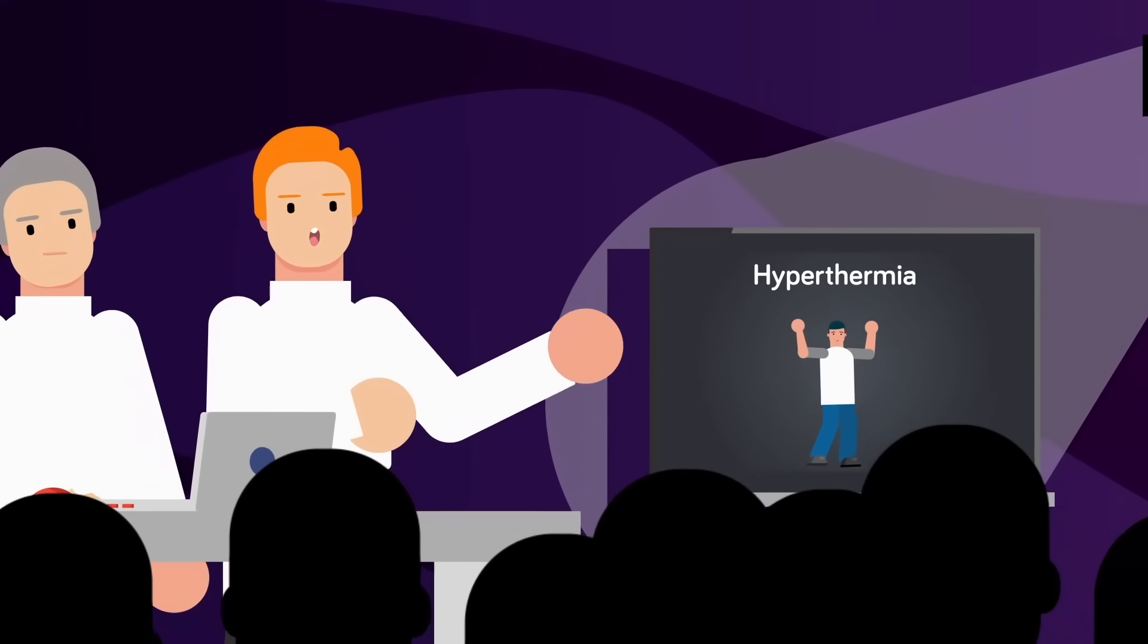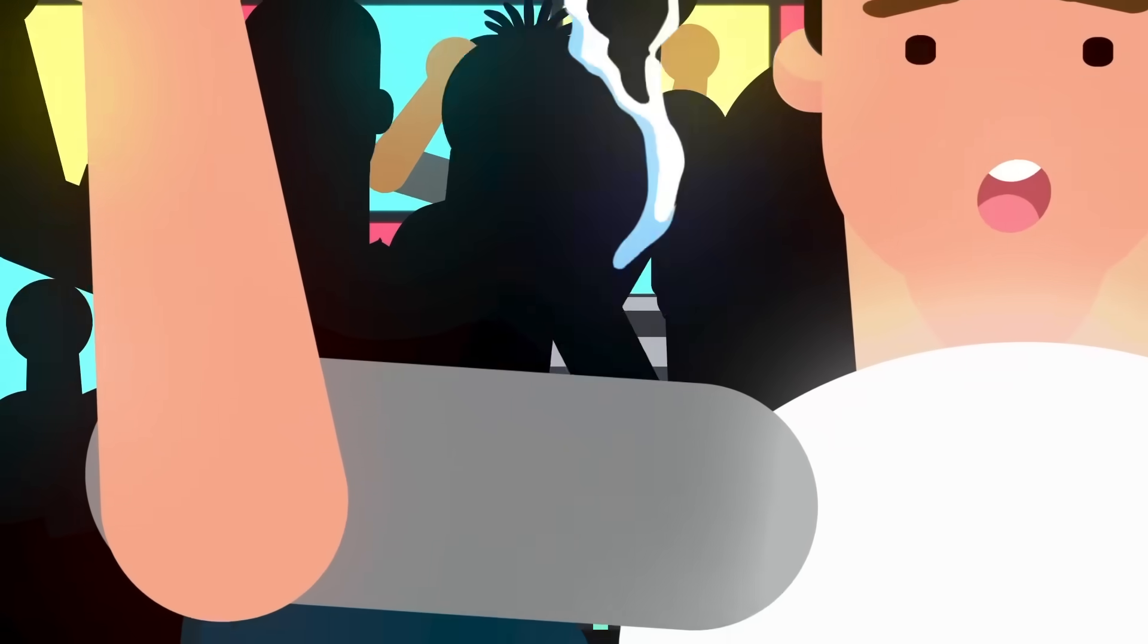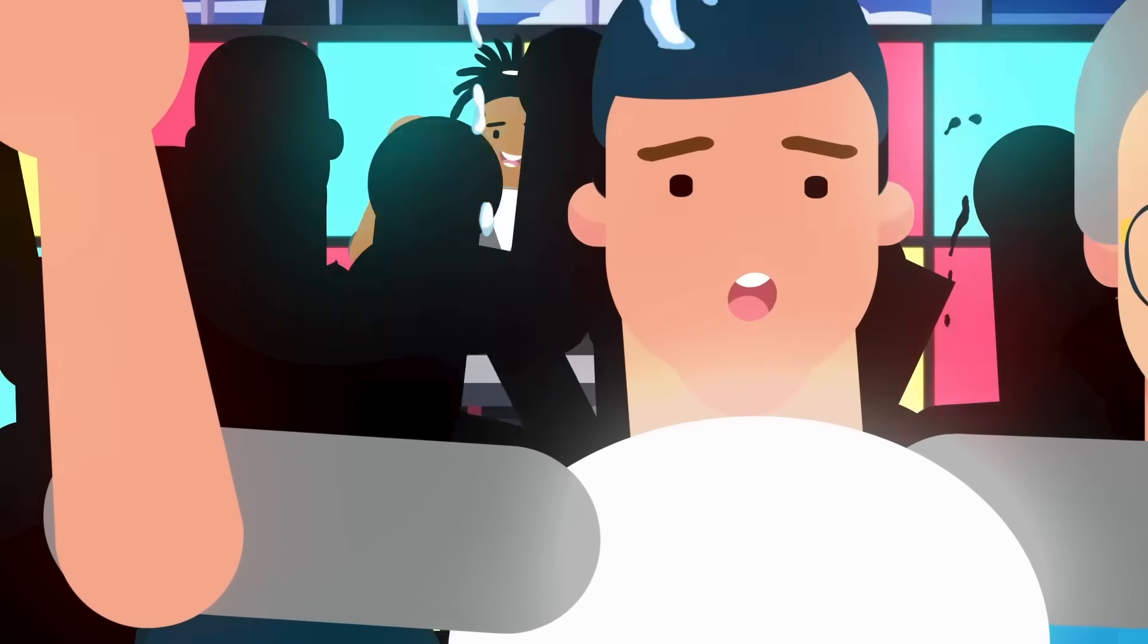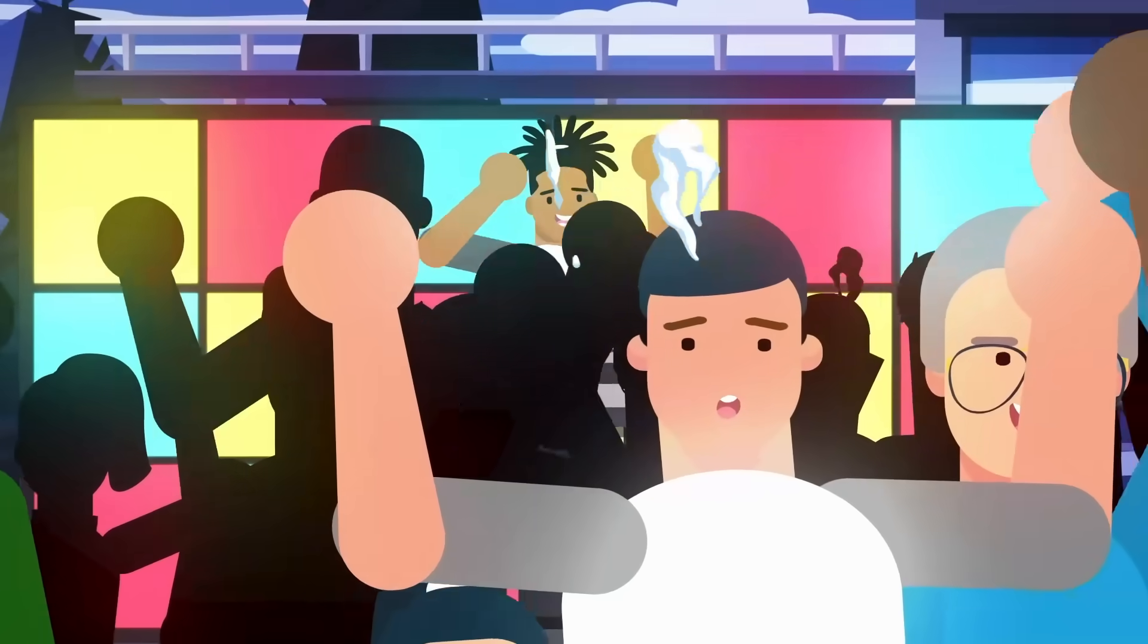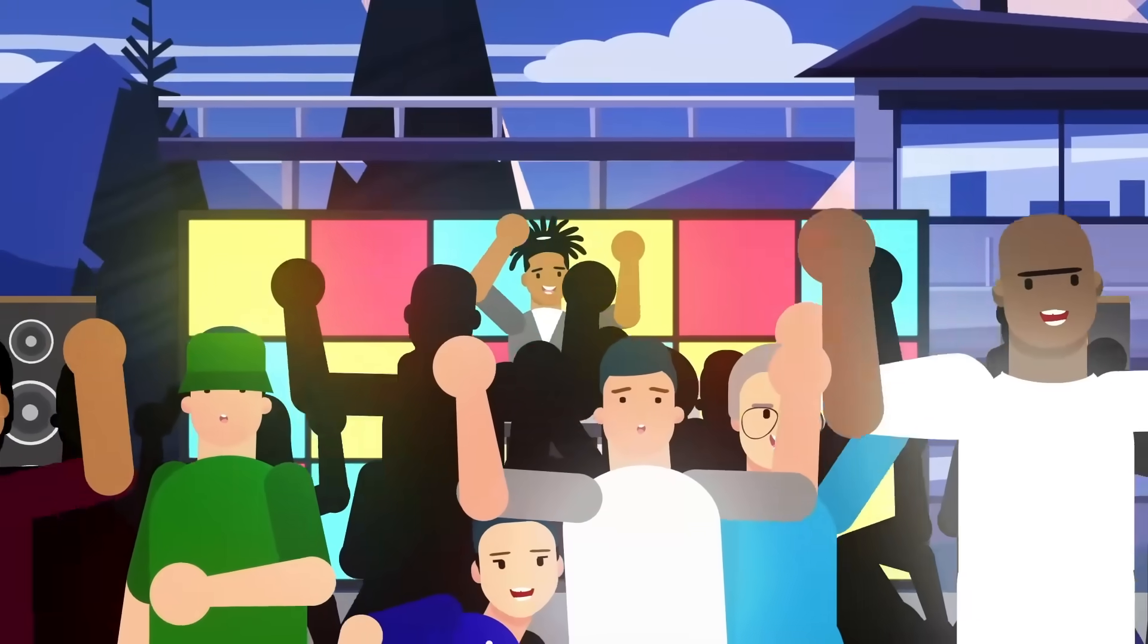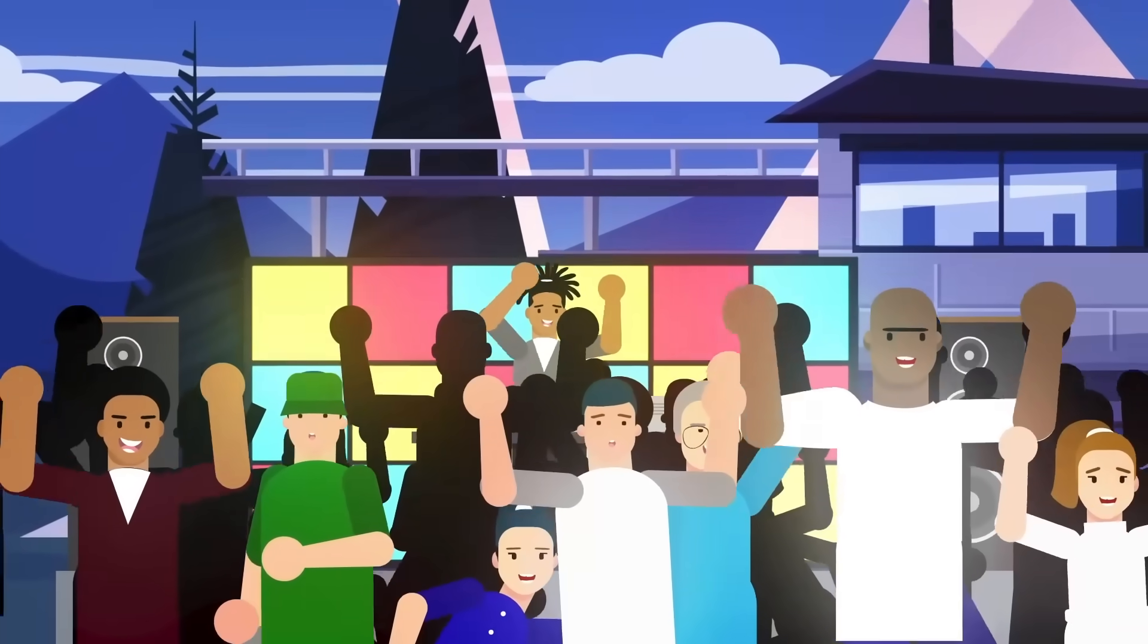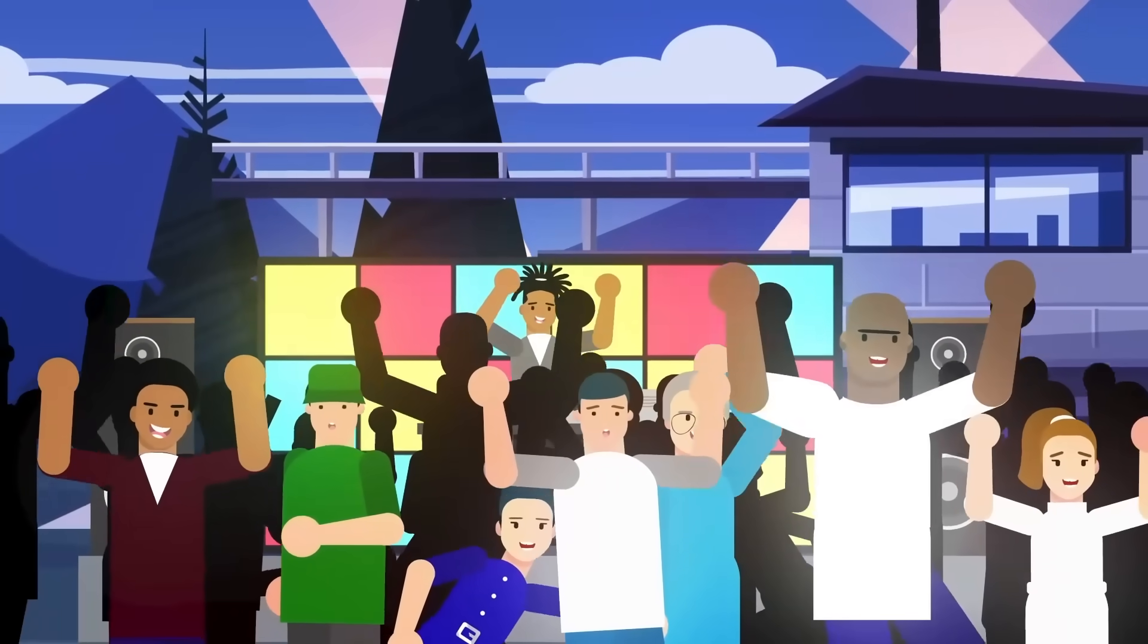It's a direct consequence of how MDMA interferes with the body's ability to regulate temperature. Studies point out that MDMA can disrupt the thermoregulatory mechanisms, leading to a dangerous rise in body temperature. For Alex, this means that even though he feels like he's just getting warmed up, his body is actually overheating, a state that can have serious health implications if not properly addressed.